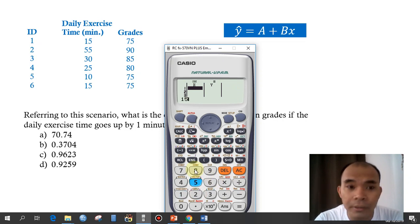And then let's input the data, 55, 30, 25, 10, and 15. And then try to go back to 1, and then input 75, 90, 85, 80, 75, and then 75.